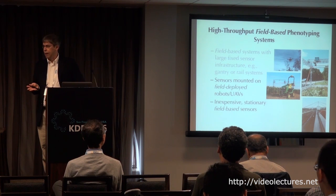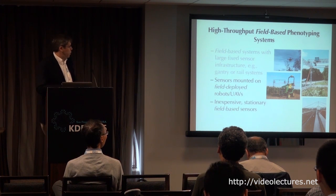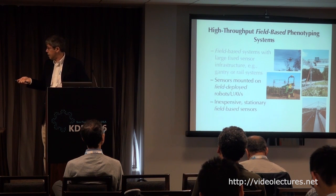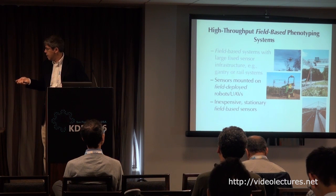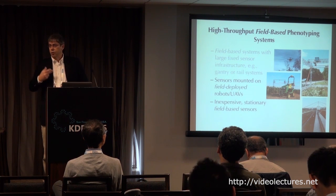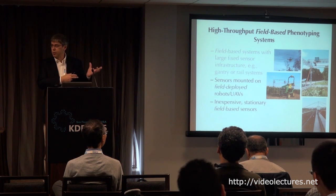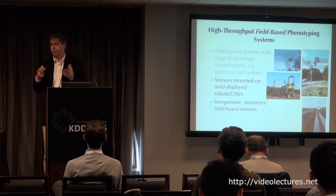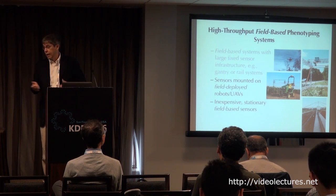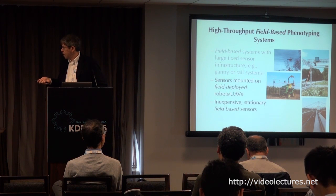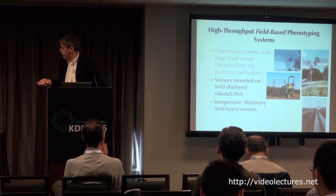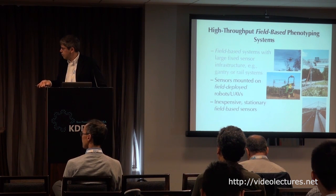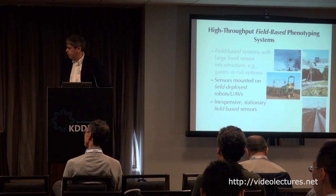There are a lot of different phenotyping platforms with different strengths and weaknesses. There are field-based systems with large fixed sensor infrastructure such as gantries and rail systems — they certainly have their place, but they're not going to help us solve these questions. We can't move these things, and they're extremely expensive, so we can't deploy them at hundreds of sites around the world. There are sensors mounted on field-deployed robots and UAVs, and also inexpensive stationary field-based sensors.